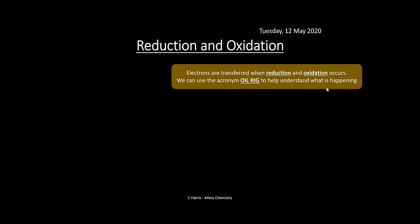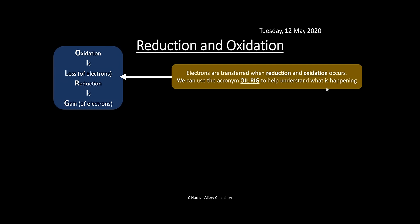Electrons are transferred when reduction and oxidation occur — this is why we talk about redox. The acronym OIL RIG helps: Oxidation Is Loss of electrons, Reduction Is Gain. You should have seen this at GCSE and it still applies at A-level. Oxidation state increasing means oxidized; decreasing means reduced.